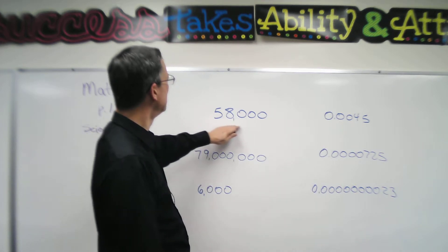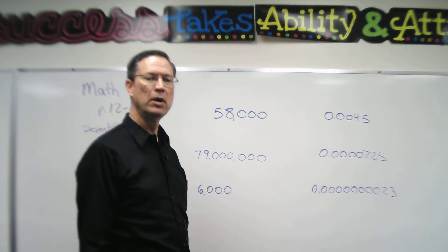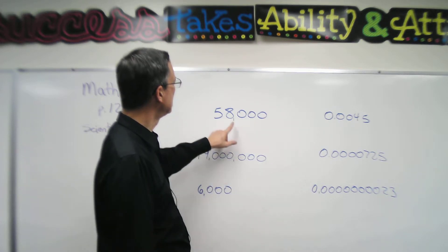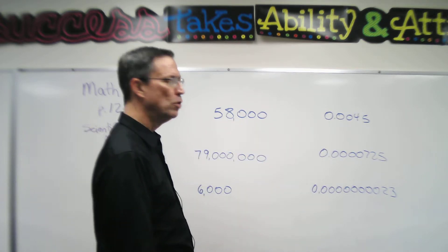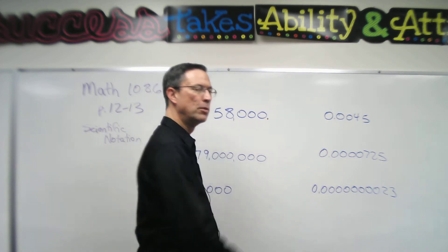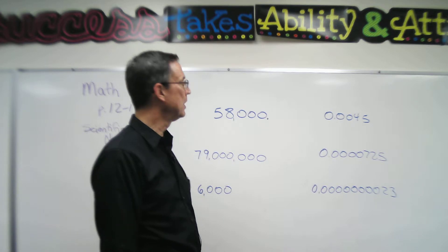I see this number but I don't see a decimal. Where is the decimal if you don't see it? This is a comma, so this is 58,000. If you don't see a decimal, the decimal is at the end of the number, like a period at the end of a sentence.